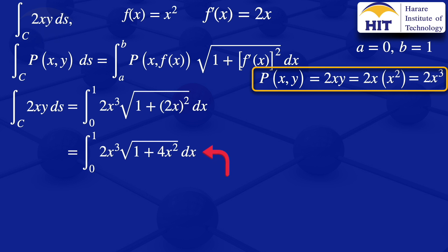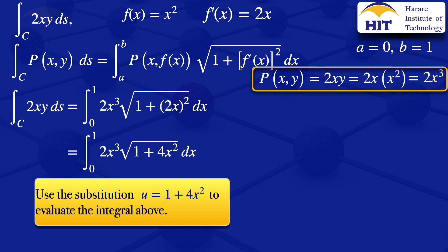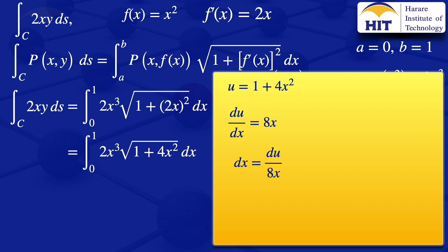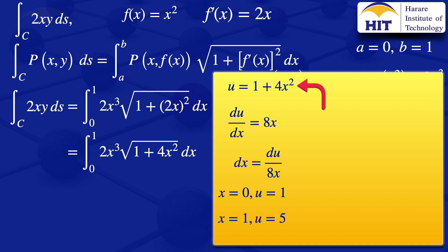To evaluate this integral we use the substitution u equals 1 plus 4x squared. The derivative of u with respect to x is 8x, so dx equals du divided by 8x. Updating the limits: when x equals 0, u equals 1; when x equals 1, u equals 5. So the limits change from 0 to 1 in x, to 1 to 5 in u.